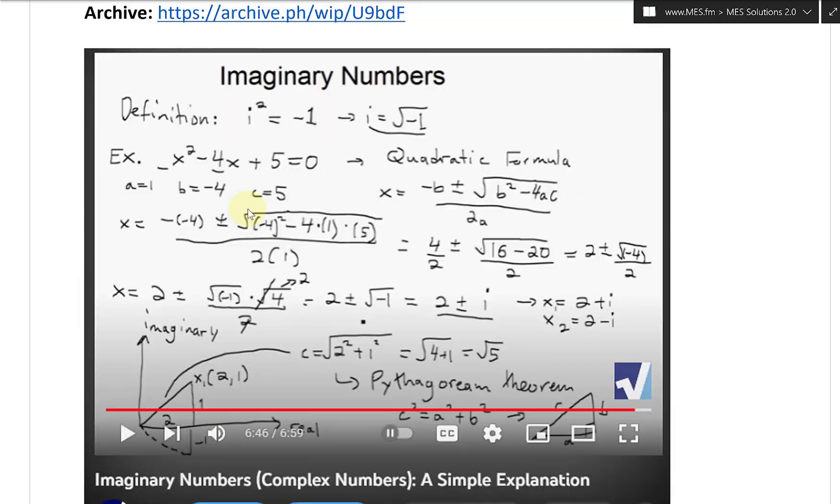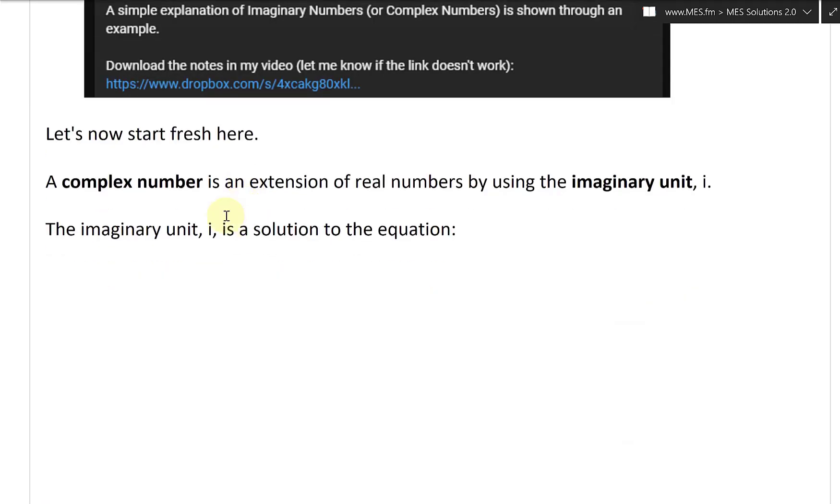Let's now start fresh here because this is just not as clear. A complex number is an extension of real numbers by using the imaginary unit, or imaginary number unit i. The imaginary unit i is a solution to the equation: